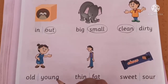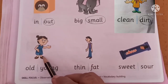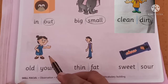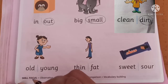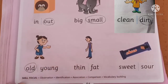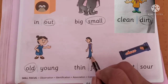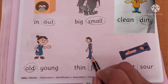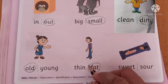Now see this picture. The girl is young. Young का opposite क्या होता है? Old. O, L, D — old. So we will circle on old. This girl is thin. Thin का opposite क्या होता है? Fat. F, A, T — fat.